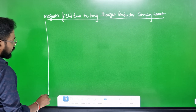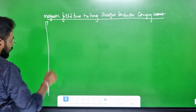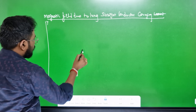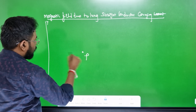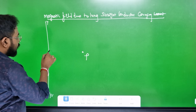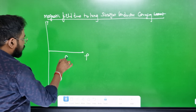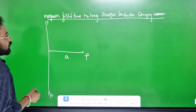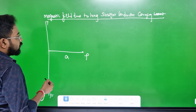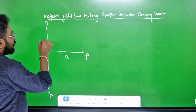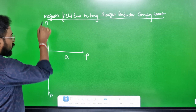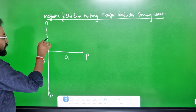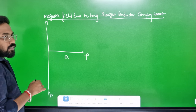This is a long conductor. This is Y and Y'. This is a point P. This distance can be A. Now, what I'm going to do here is integrate over the full conductor to find the magnetic field.